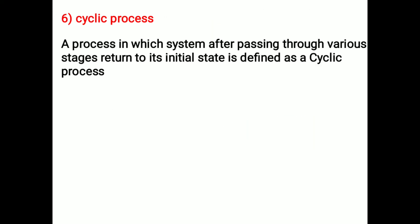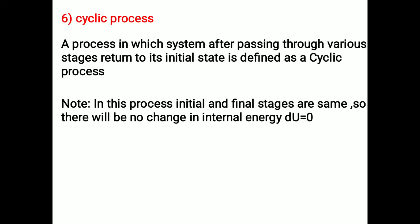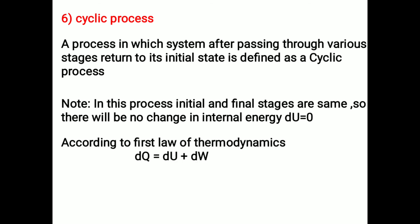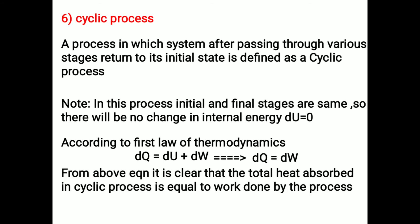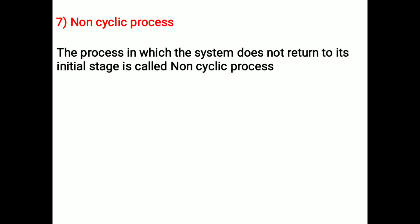Cyclic process: a process in which the system, after passing through various stages, returns to its initial state is called a cyclic process. In this process, initial and final states are the same, so there is no change in internal energy — du equals zero. According to the first law, dq equals dw, meaning the total heat absorbed equals the work done by the system. Example: the Carnot cycle and heat engine. Non-cyclic process: the process in which the system does not return to its initial state. Example: boiling of water.